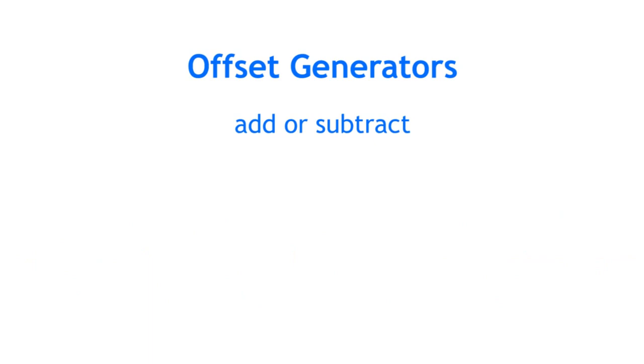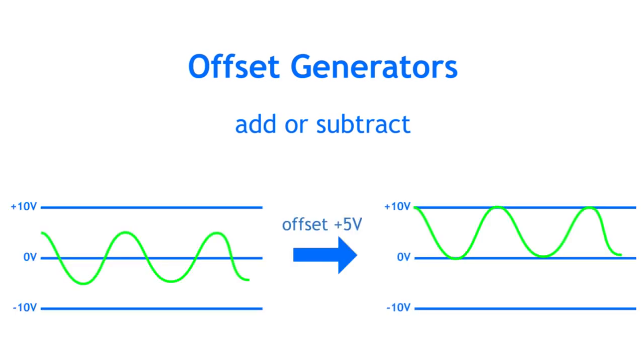Offset generators. Offset generators add or subtract a constant voltage to an incoming signal. For example, an LFO might swing from minus 5 to plus 5 volts, but you may need it to swing between 0 and 10 volts. By adding a constant plus 5 volts with an offset module you could achieve this.